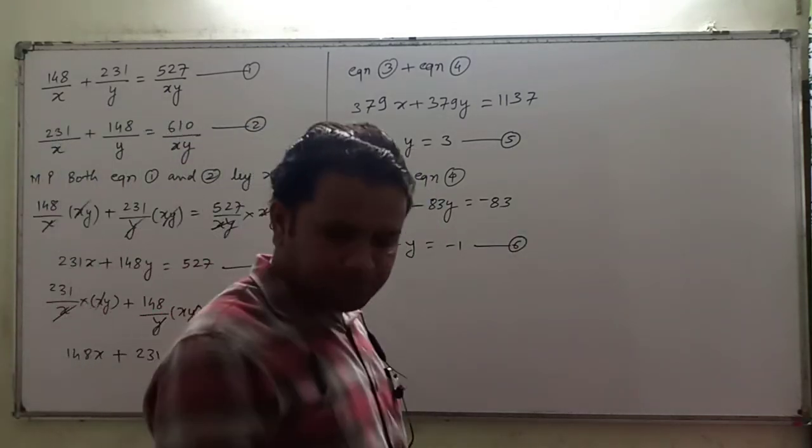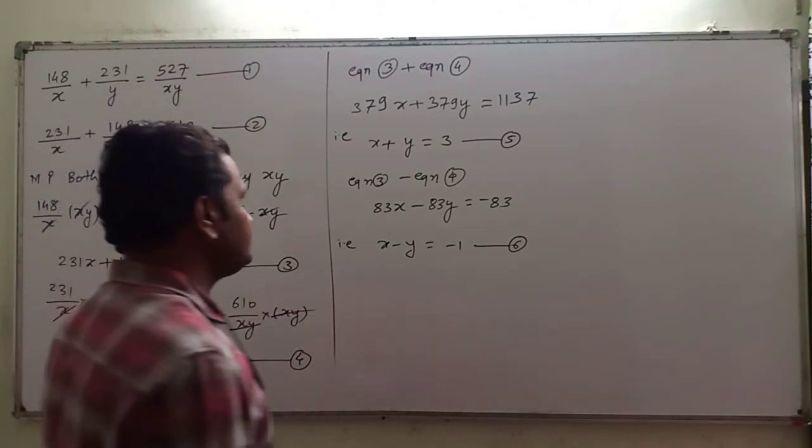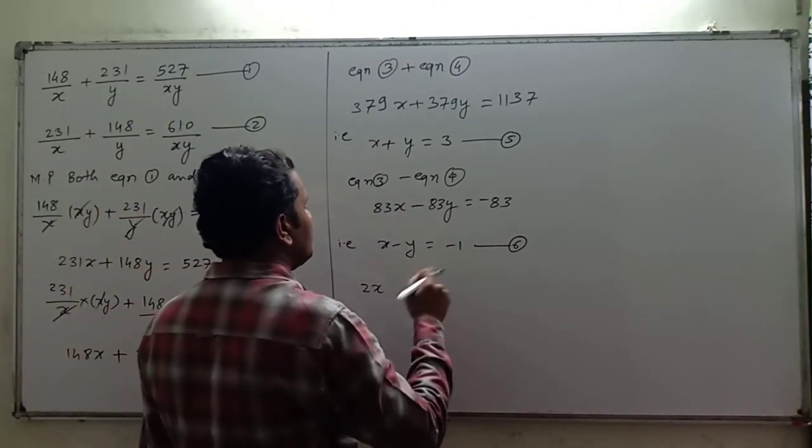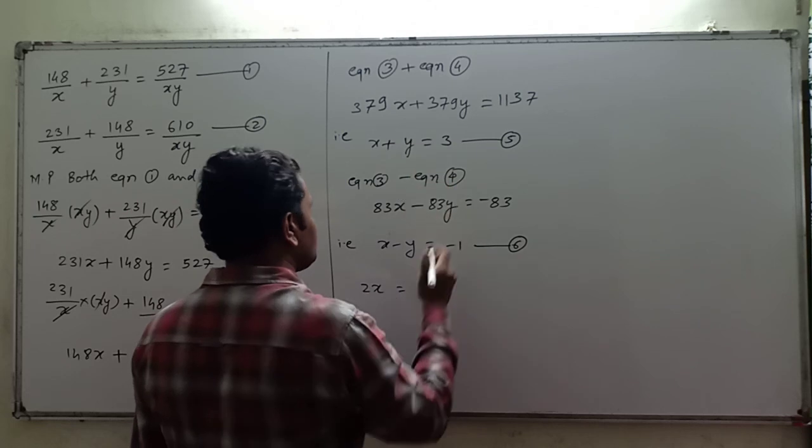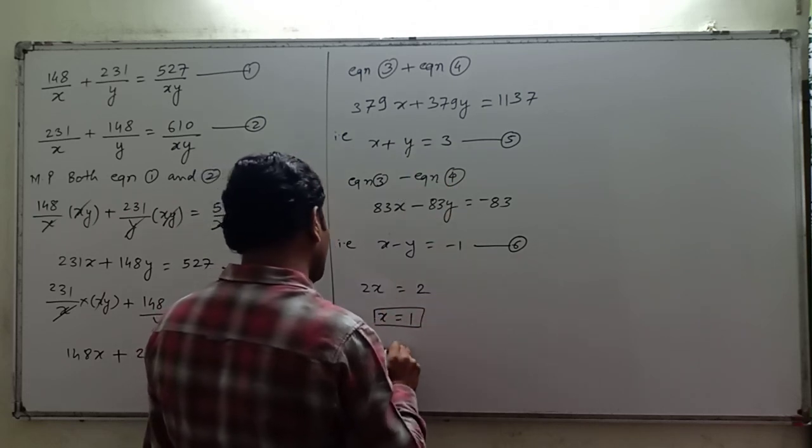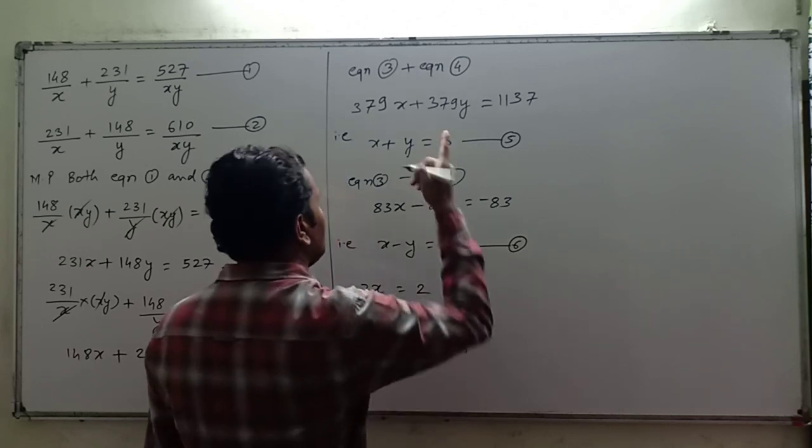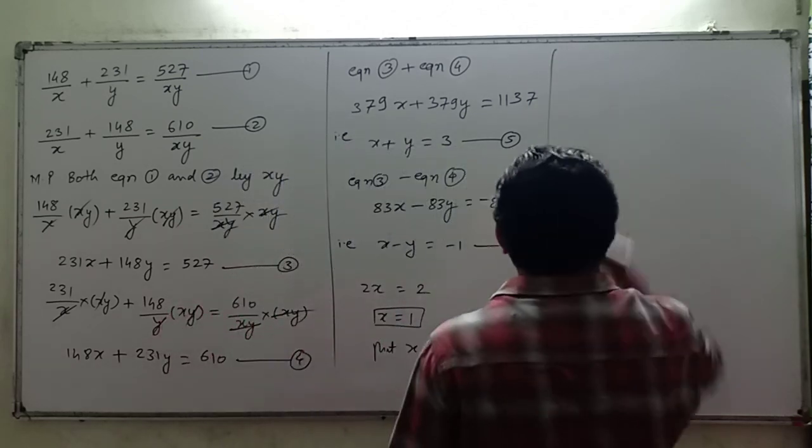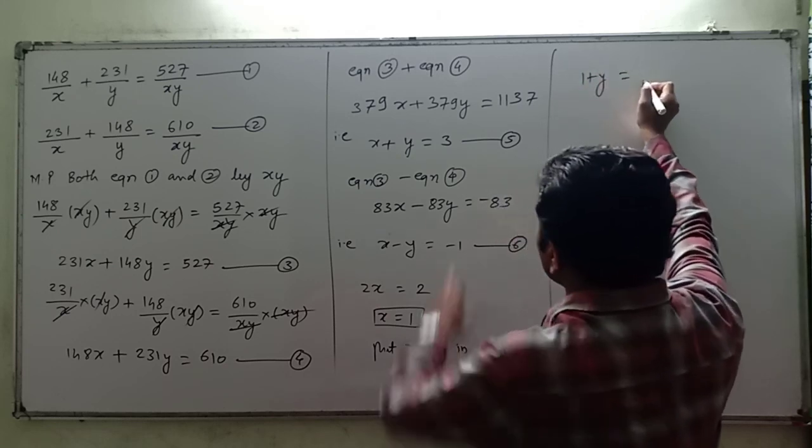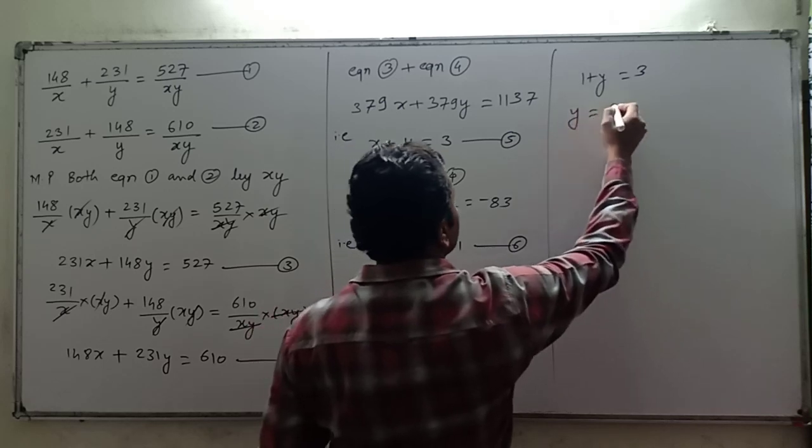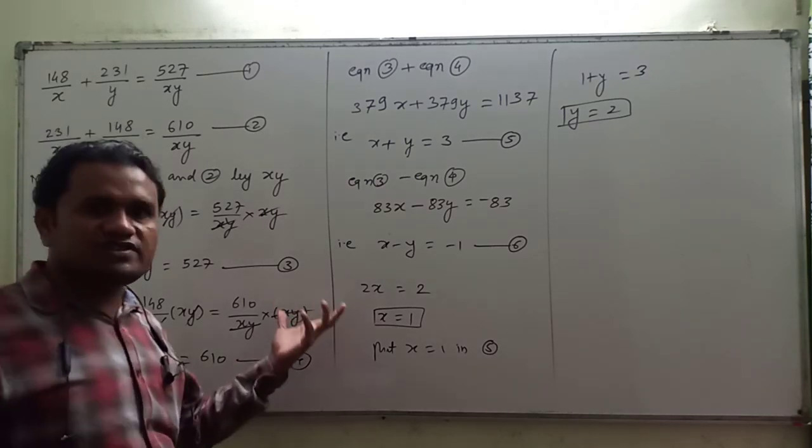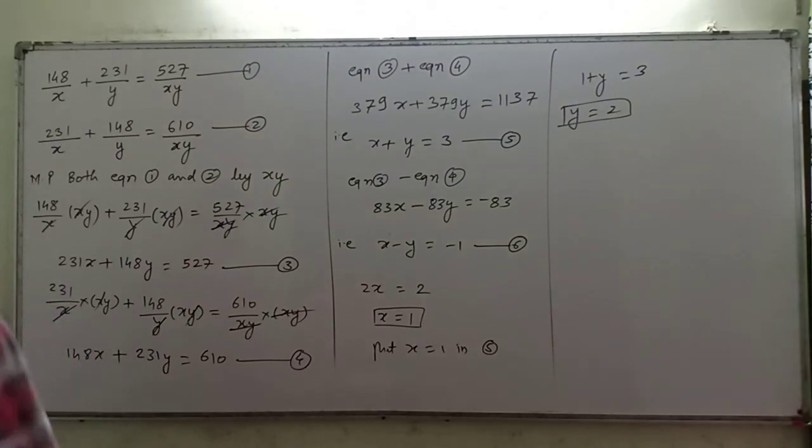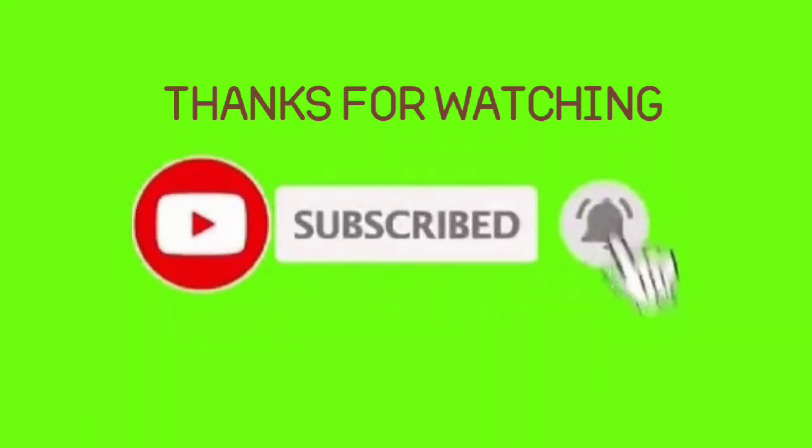Now simply add equations 5 and 6. x + y = 3 and x - y = -1. Adding: 2x = 2, so x = 1. Put x = 1 in equation 5: 1 + y = 3, so y = 2. Therefore x = 1 and y = 2. In this way we solved it. Write down that.